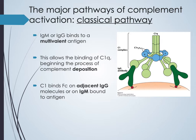Focusing on the classical pathway: antibodies — usually IgM or IgG because they have multivalent binding — initiate the process. C1Q binds and complexes with the antibody, then C1R and S complex to stabilize it. C1Q, R, and S together form the C1 complex, which binds the antibodies and causes activation of C2 and C4.